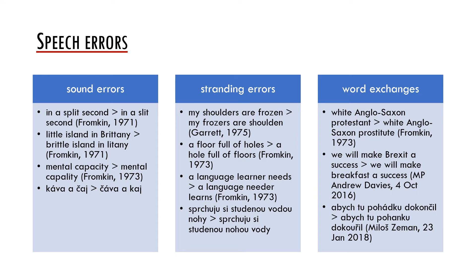On this slide we distinguish three main categories of speech errors. The first type are sound errors. These may be quite diverse and Fromkin distinguishes many subtypes. For example, they may consist in the deletion of certain sounds, such as saying 'in a slit second' instead of 'in a split second.' Another type of sound errors are consonant reversals, such as 'brittle island in litany' instead of 'little island in Brittany,' or the Czech example 'čáva a kaj' instead of 'káva a čaj,' which means 'coffee and tea.' Other sound errors may be perseverations of consonants, such as 'mental capality' instead of 'mental capacity.'